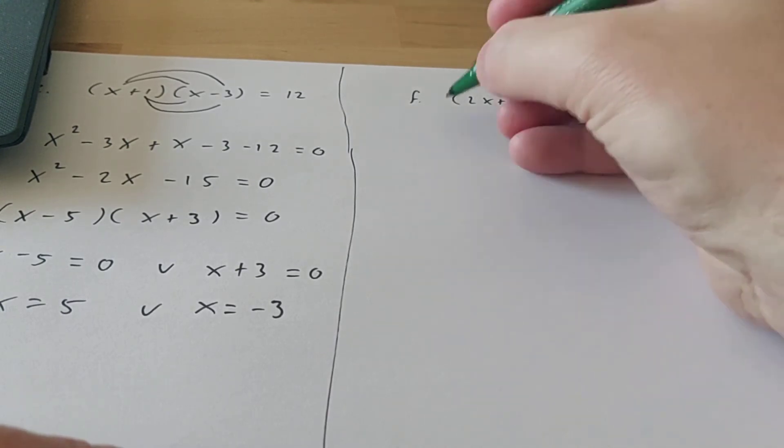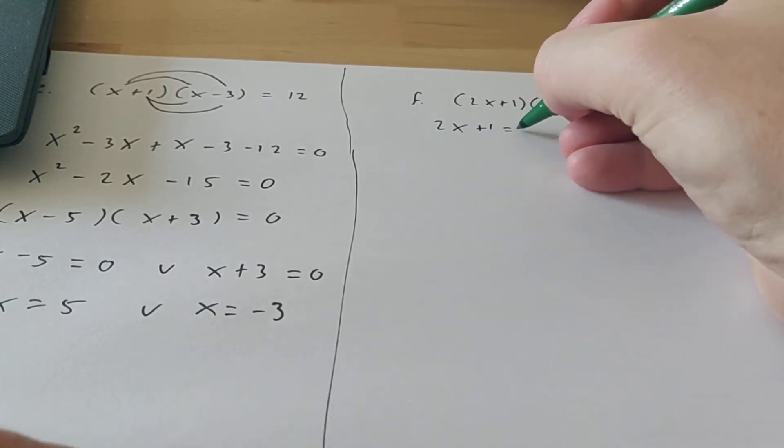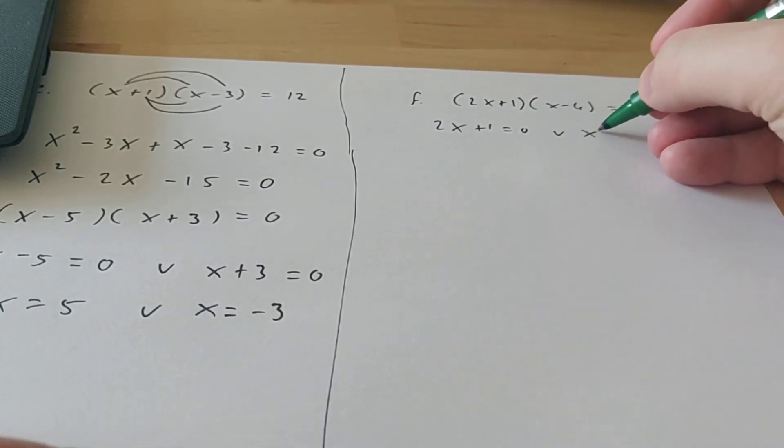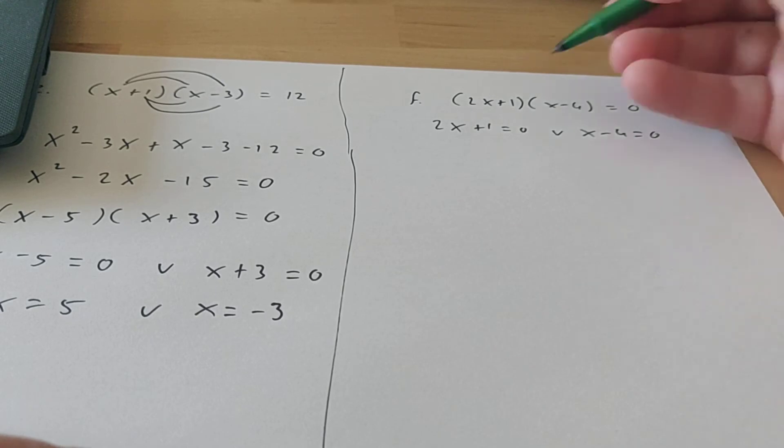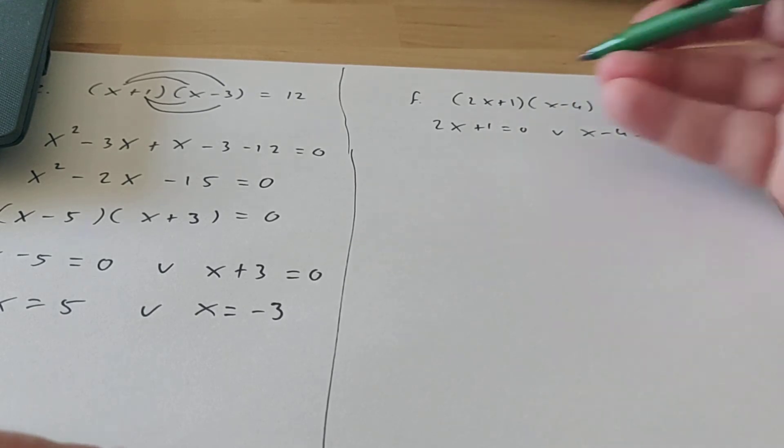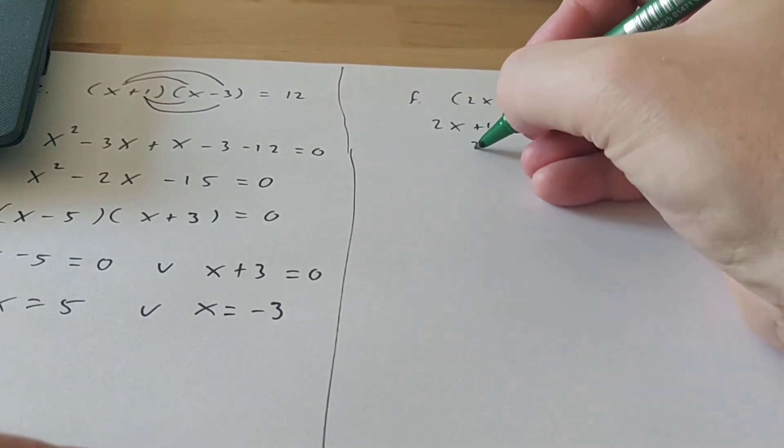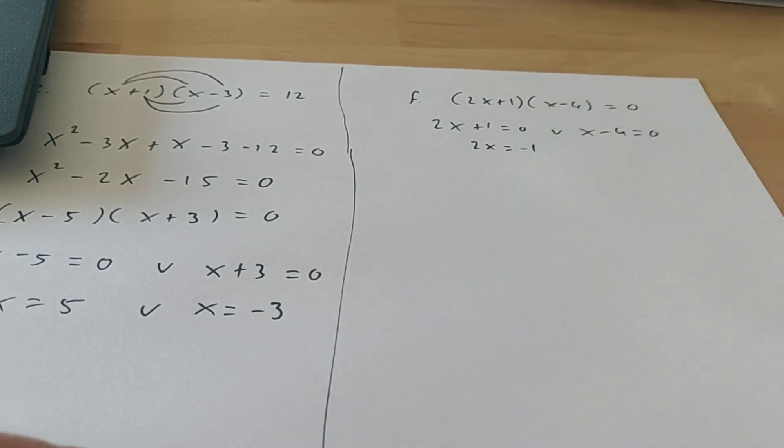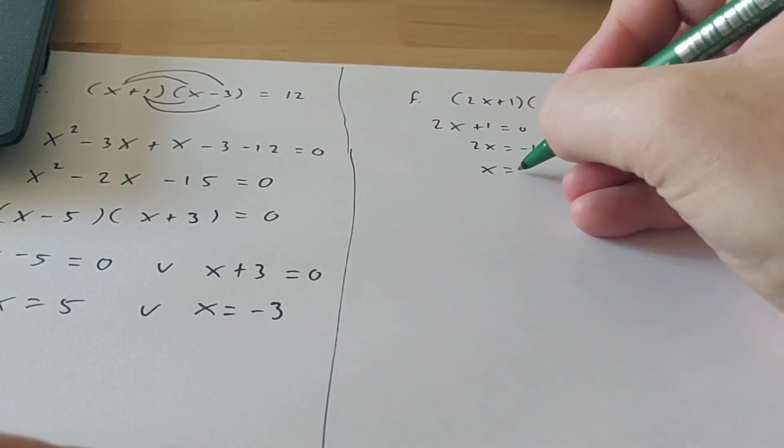But because it's already factorized, you can just say 2x plus 1 equals 0, or x minus 4 equals 0. So just the things that are in the brackets. And then here we have to move the 1 to the other side. So 2x equals minus 1. That means that x is minus a half.